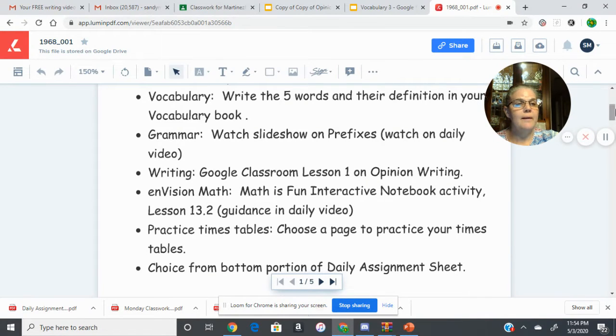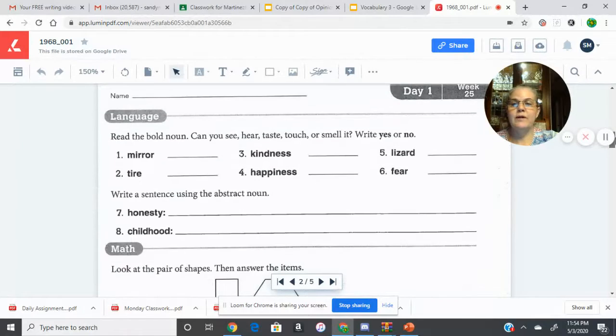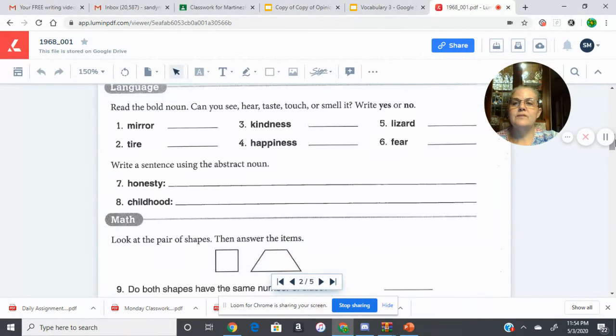Let's get started on our morning work page 131. On the top, it says, read the bold noun. Can you see, hear, taste, touch, or smell it? Yes or no. When you see the word mirror, can you see a mirror, hear it, taste it, touch it, or smell it? If you can say yes to any of those, you write yes.